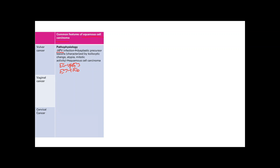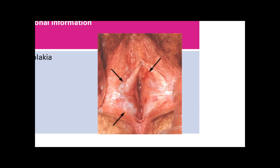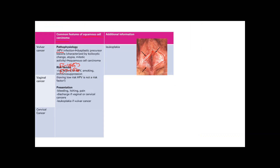Risk factors include any HPV risk factor — early sexual activity, multiple partners — plus smoking and immunosuppression. Immunosuppression allows HPV to persist longer, giving more opportunity for dysplasia and cancer. Presentation includes bleeding, itching, and pain. Vaginal and cervical cancers may show discharge; vulvar cancers may show leukoplakia — a whitish color change with slight thinning of the vulva.